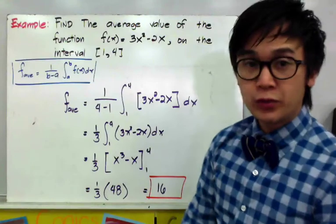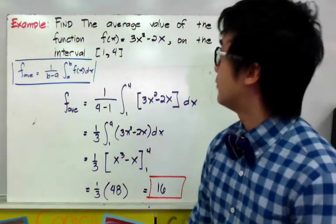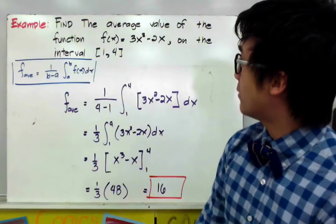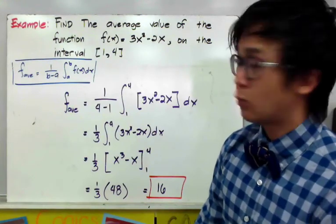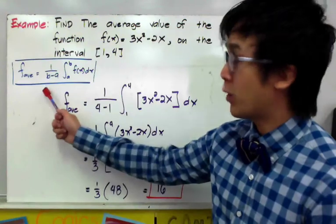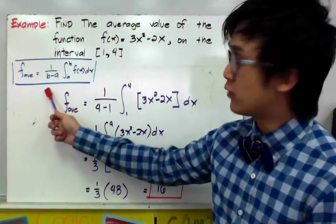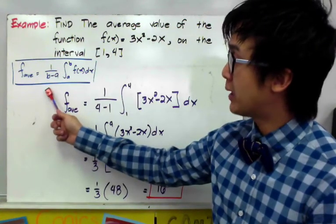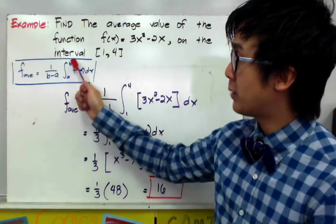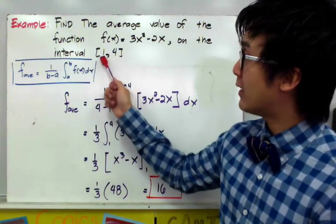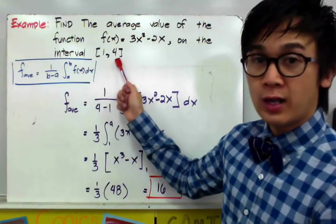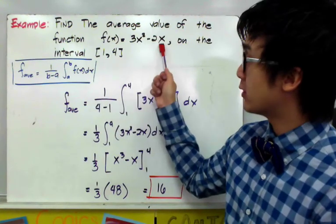For our first example, let's find the average value of the function f of x, which is equal to 3x squared minus 2x, on the interval 1 through 4. We know that the formula for finding the average value is 1 over b minus a times the integral of f of x dx from a to b, wherein a is 1 and b is 4, given the function 3x squared minus 2x.